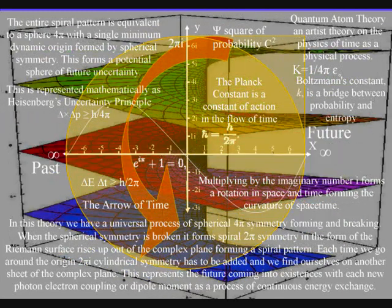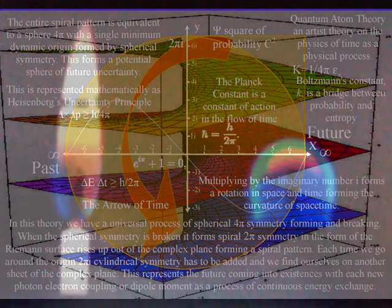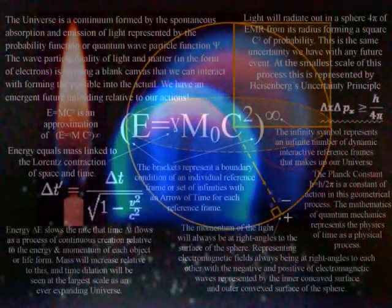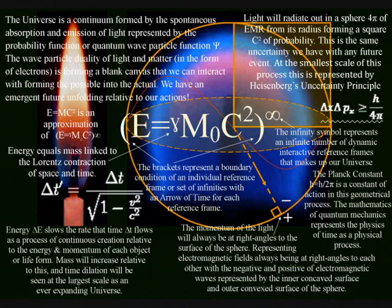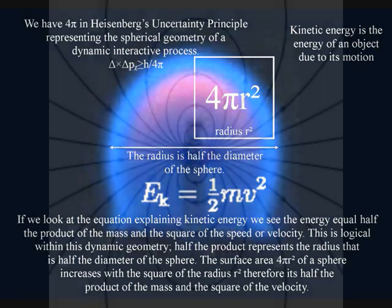These images from the International Space Station show a candle flame in zero gravity naturally forming a sphere that is interacting with the environment on the two-dimensional surface of the sphere. In this theory, the two-dimensional surface of the sphere forms an interactive boundary condition, with the concave inner surface of the sphere representing negative charge and the outer convex surface representing positive charge.